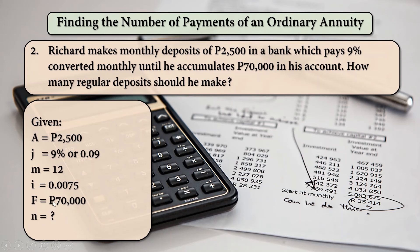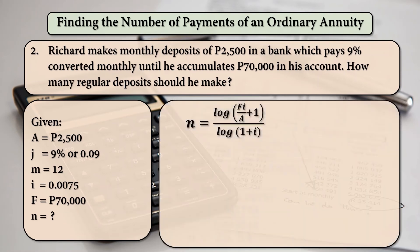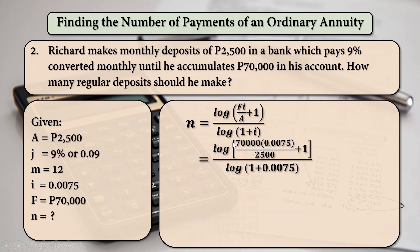We have to find for the number of regular deposits of Richard. Using the formula and substituting the values: log of 70,000 times 0.0075 divided by 2,500 plus 1, all over log of 1 plus 0.0075. The resulting value of this quantity will be equal to 1.21, and the result of 1 plus 0.0075 is 1.0075.